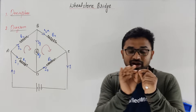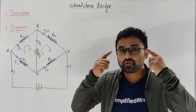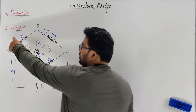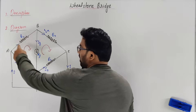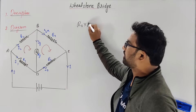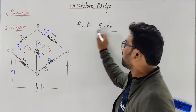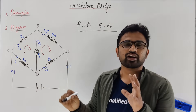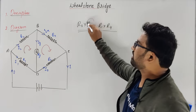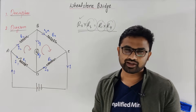Don't mug up anything because notations change. What I say every time is: if you multiply these two things diagonally — R2 into R3 — that must be equal to R1 into R4. This is the condition under balanced condition. By knowing three values, you can find the unknown value. It's very simple.